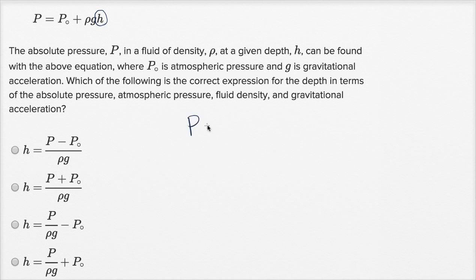So we have P is equal to P sub zero—I'll call this P sub zero—plus rho times g times h. Now to solve for h, I want to isolate this term that contains h on the right hand side, so let me subtract P sub zero from both sides.